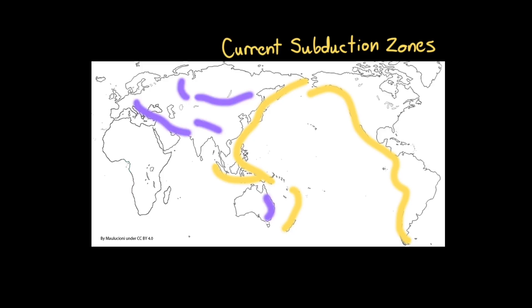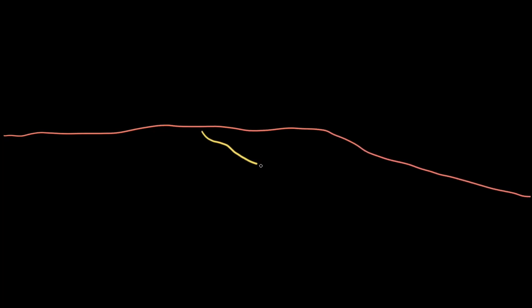However, we also find many of these ore deposits throughout Eurasia and Australia. Why? Turns out, many of these places were subduction zones in the ancient past. The geologic processes that form non-renewable resources are always happening, even if they occur over thousands or millions of years. This means that non-renewable resources are not always found where they first formed.